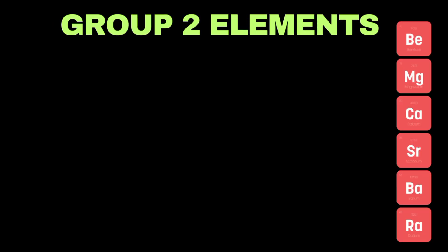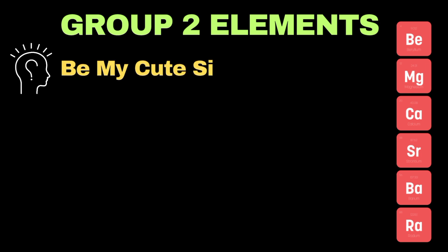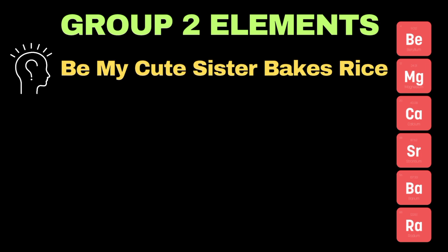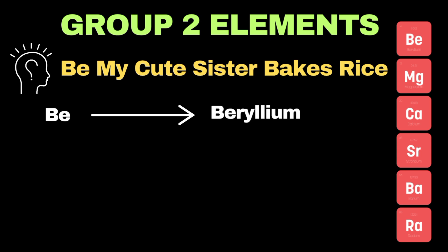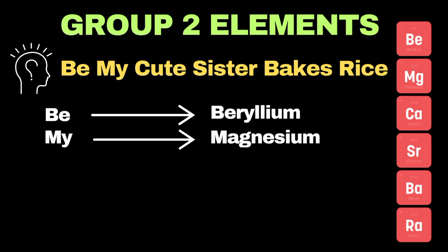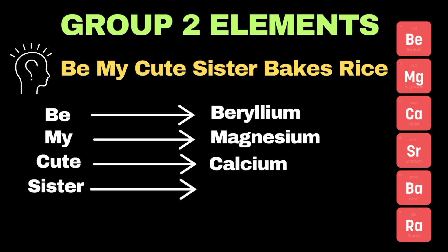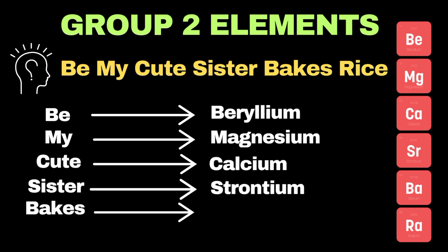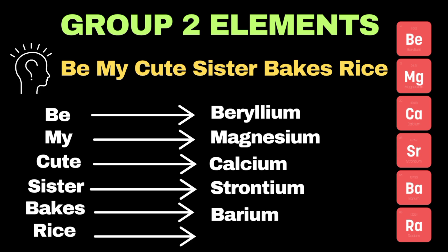Now moving towards group 2 elements, which are called alkaline earth metals. The mnemonic trick is: 'Be my cute sister bakes rice.' Here 'B' refers to beryllium, 'my' represents magnesium, 'cute' is used for calcium, 'sister' refers to strontium, 'bakes' stands for barium, and 'rice' is used to represent radium.